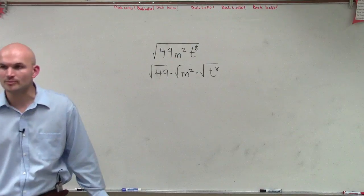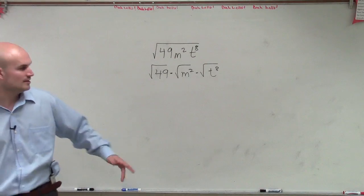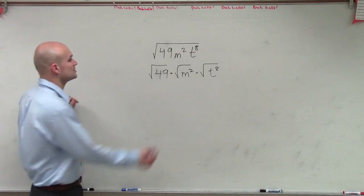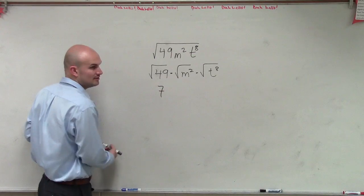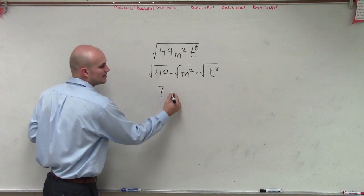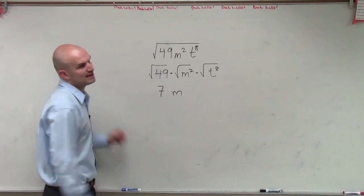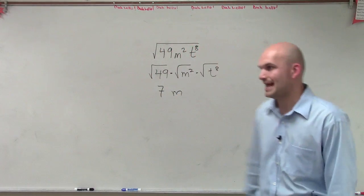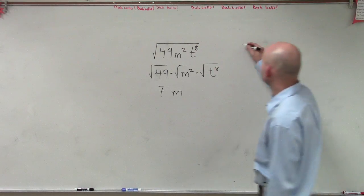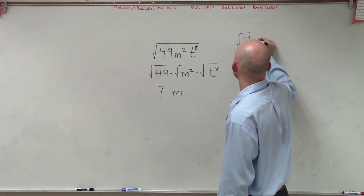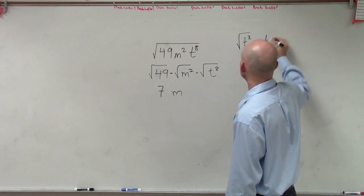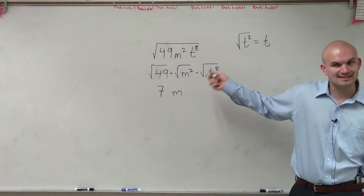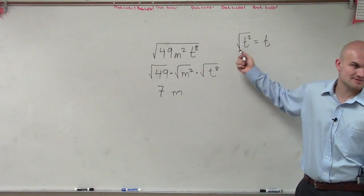Now this is helpful, because these are all different terms. So the square root of 49 — we know that 49 is a perfect square number, so the square root of 49 is 7. The square root of m squared is just going to be m. But now we kind of run into a little problem, because we have the square root of t to the eighth. And we know that the square root of t squared equals t, so I want to see: can I rewrite t to the eighth as a product of t squared?